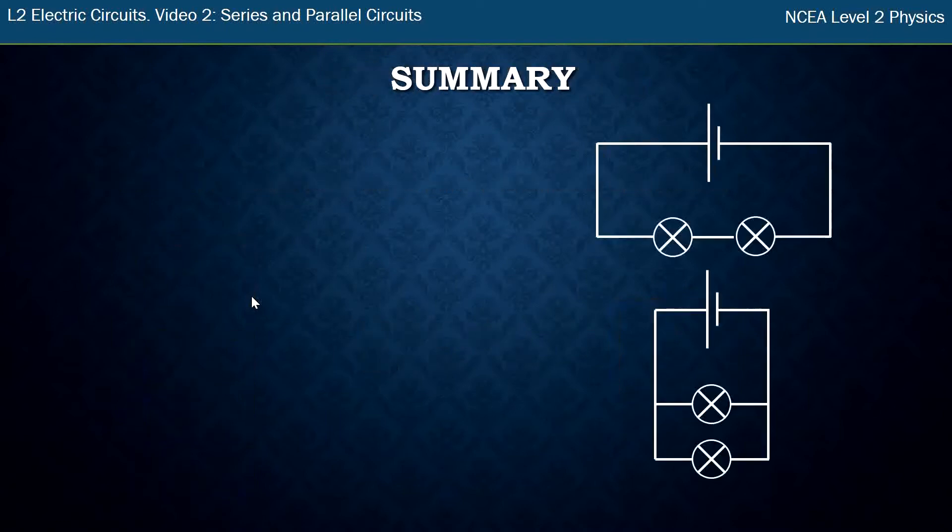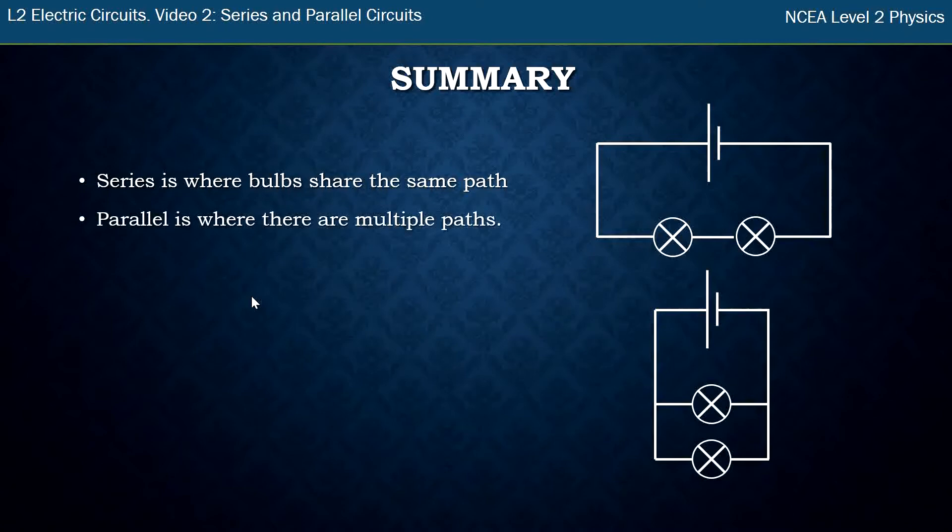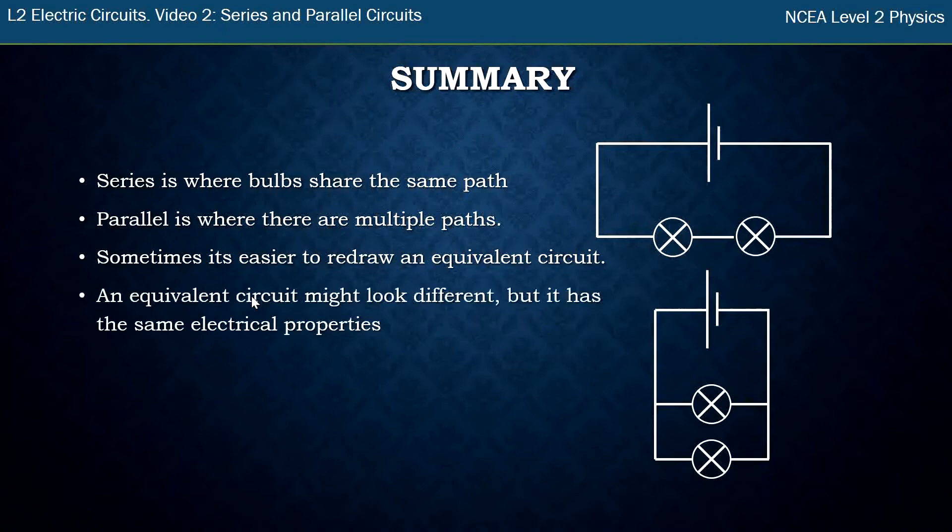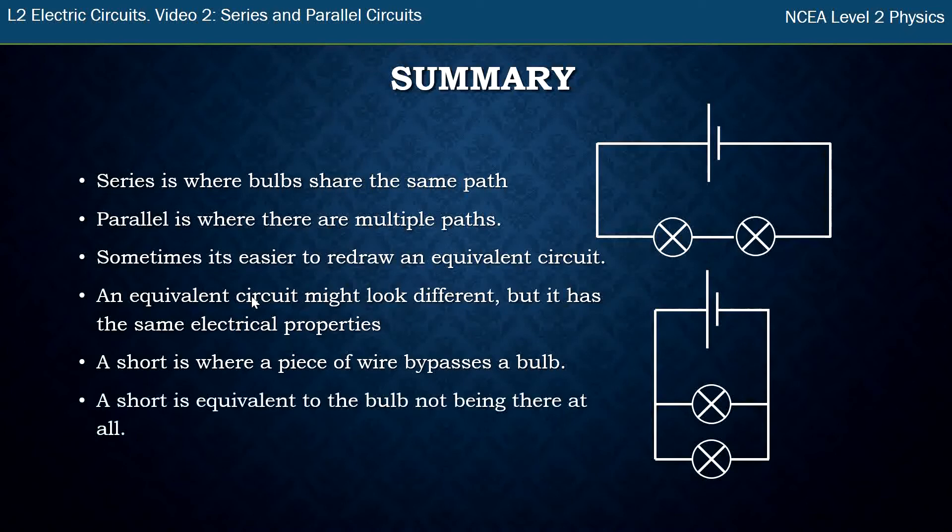So a bit of a longer video on series and parallel, let's go over what we've done here. A series circuit is where bulbs share the same path and a parallel is where there's multiple paths. So we've got the two circuits here, one's series and one's parallel. Sometimes with really complicated circuits with more than two bulbs, you might want to redraw it as an equivalent circuit. Now an equivalent circuit might look different, but it has the same electrical properties. So I am always redrawing complicated ones to be easier for me to deal with. The last thing we looked at was a short. A short is where a piece of wire bypasses a bulb, and it's equivalent to the bulb not being there at all. Alright, so thanks for watching.